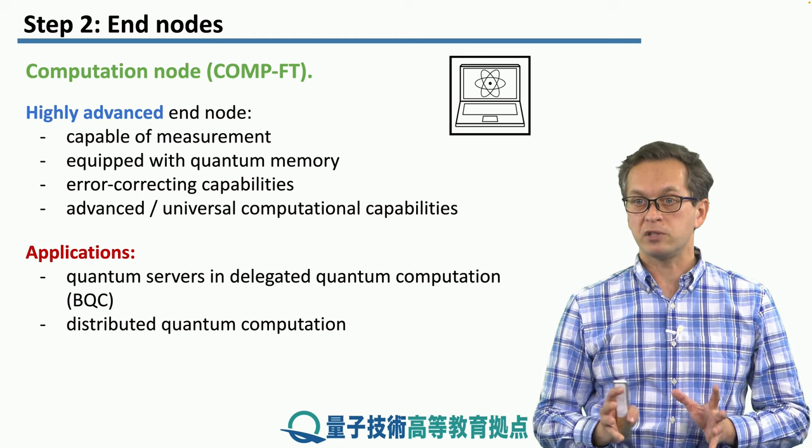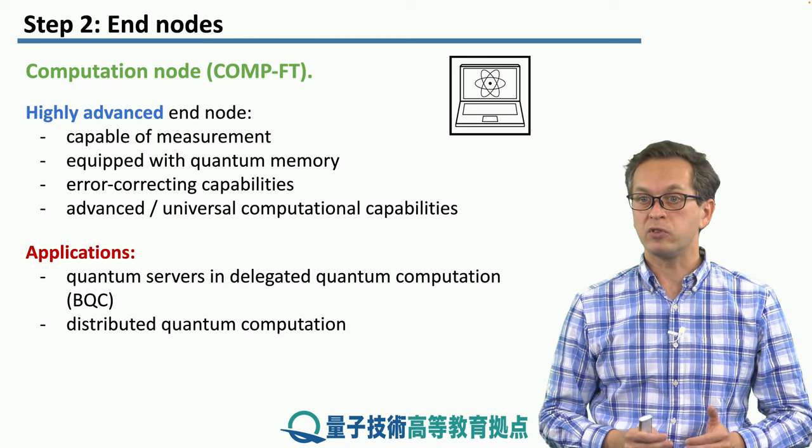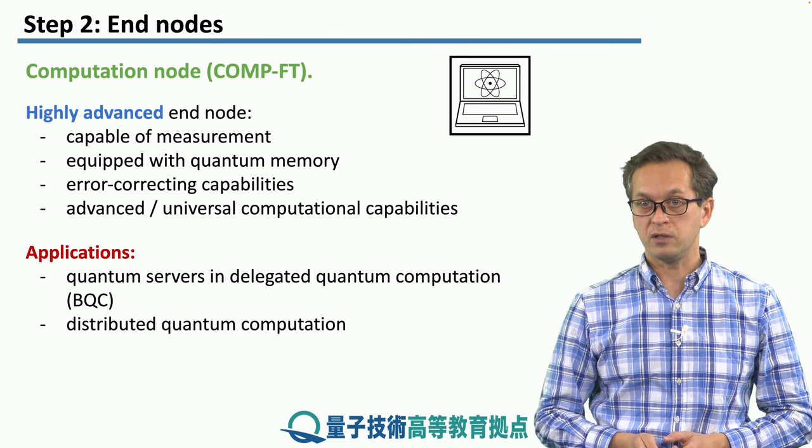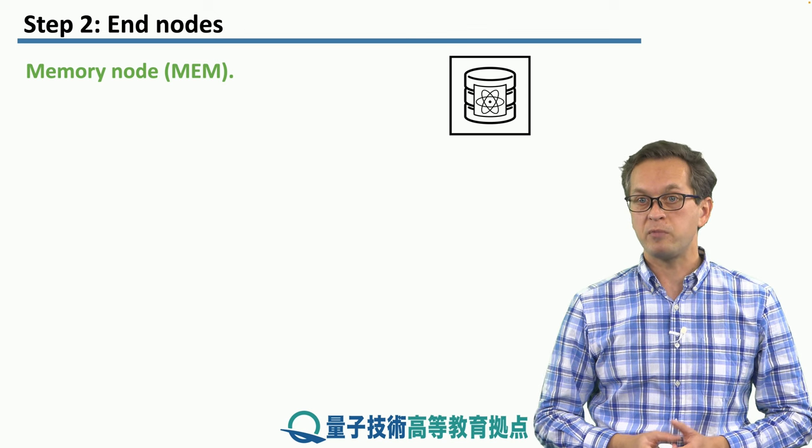Now these are the computational nodes. These are the nodes that perform information processing. Classically, we've got also nodes that just store information. And that will be the job of the memory node, or MEM.